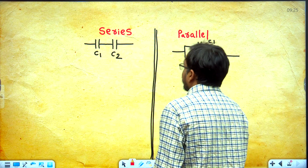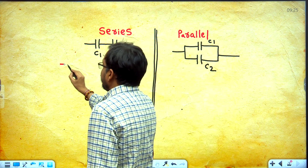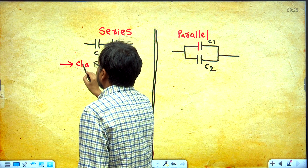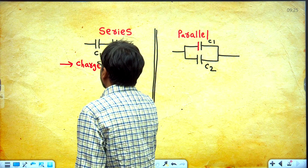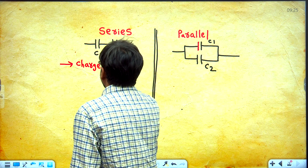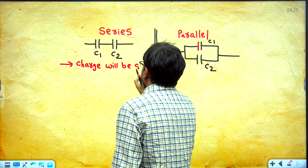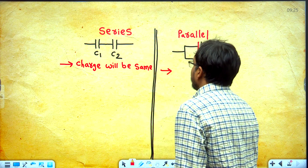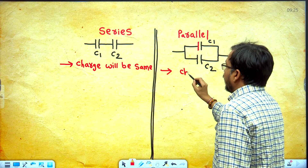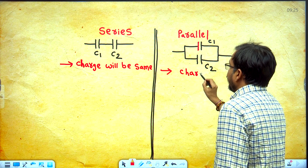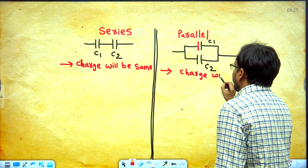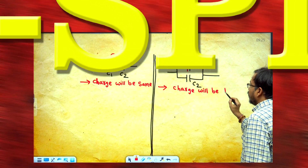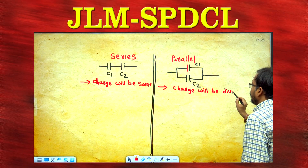When the two capacitors are in series, charge will be same. In parallel combination, charge will be divided. Charge will be same when the two capacitors are in series; charge will be divided when the two capacitors are in parallel.